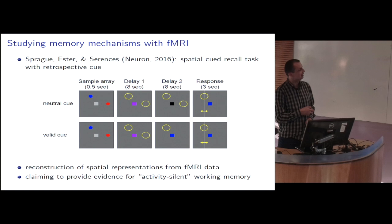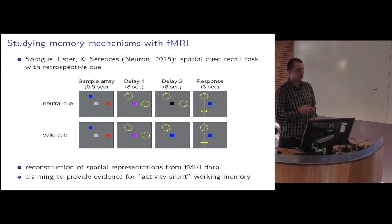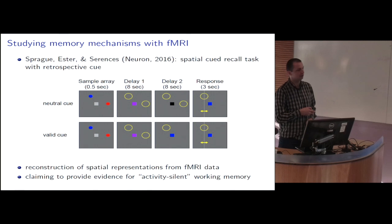The task looked like this. In all cases, the subject had to remember the locations of two stimuli — two colored disks, always one red and one blue — and after a total delay of 16 seconds, they had to report the location of one of these disks, indicated by a change in the color of the fixation point, adjusting a horizontal or vertical bar. In all trials, for the first half of the delay period, they had to keep both items in memory. But in some trials, in the second half of the delay, a cue already indicated which item was going to be tested, so they had to only retain that one and could forget the other.